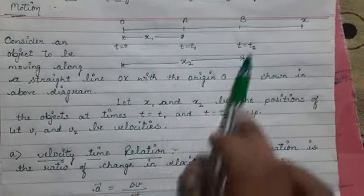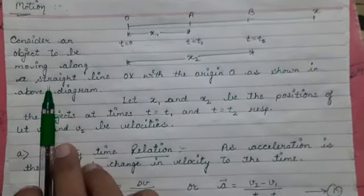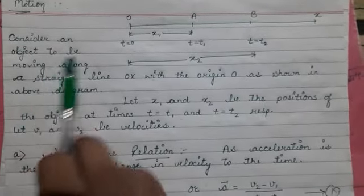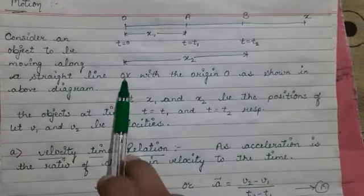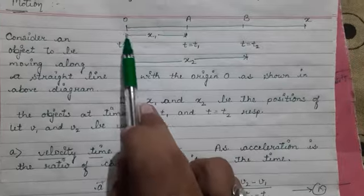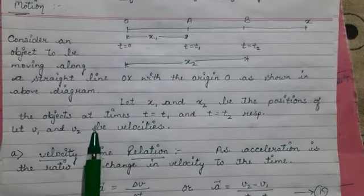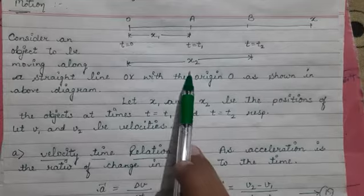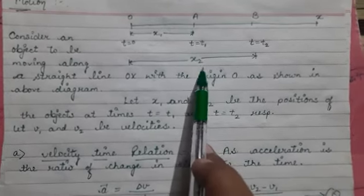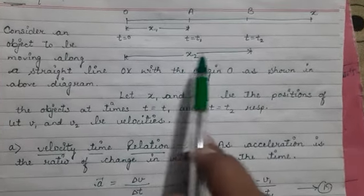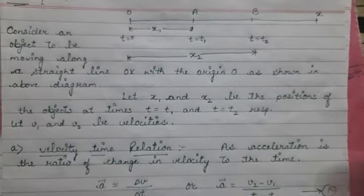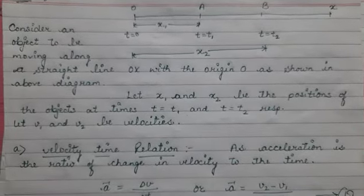This all about I am writing in the explanation content also. So consider an object to be moving along a straight line OX with the origin as shown in this diagram. We know that X1 and X2 be the position of the objects or you can say that be the position vectors or you can say that also be the distances.